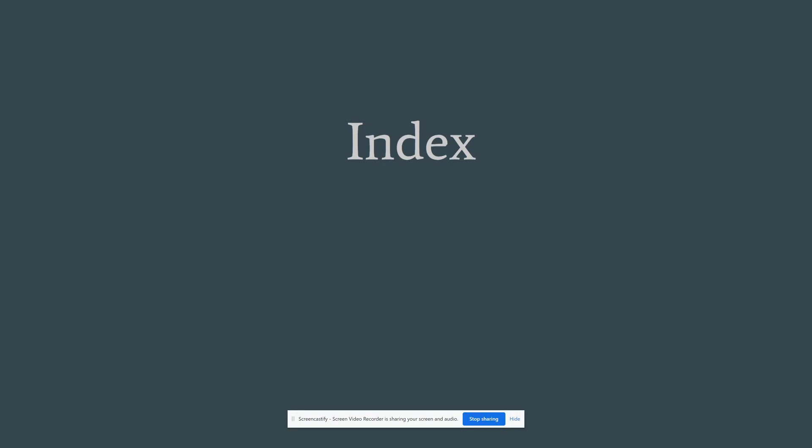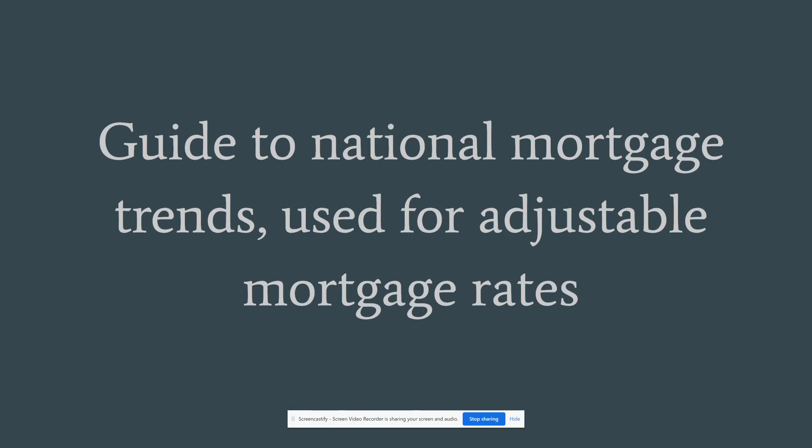Index. This is the guide to national mortgage trends, used for adjustable rate mortgages or ARMs. The most common index used for adjustable rate mortgages is one-year treasury bills — specifically the index on one-year U.S. treasury bills. The index for most ARMs is going to be based off that.